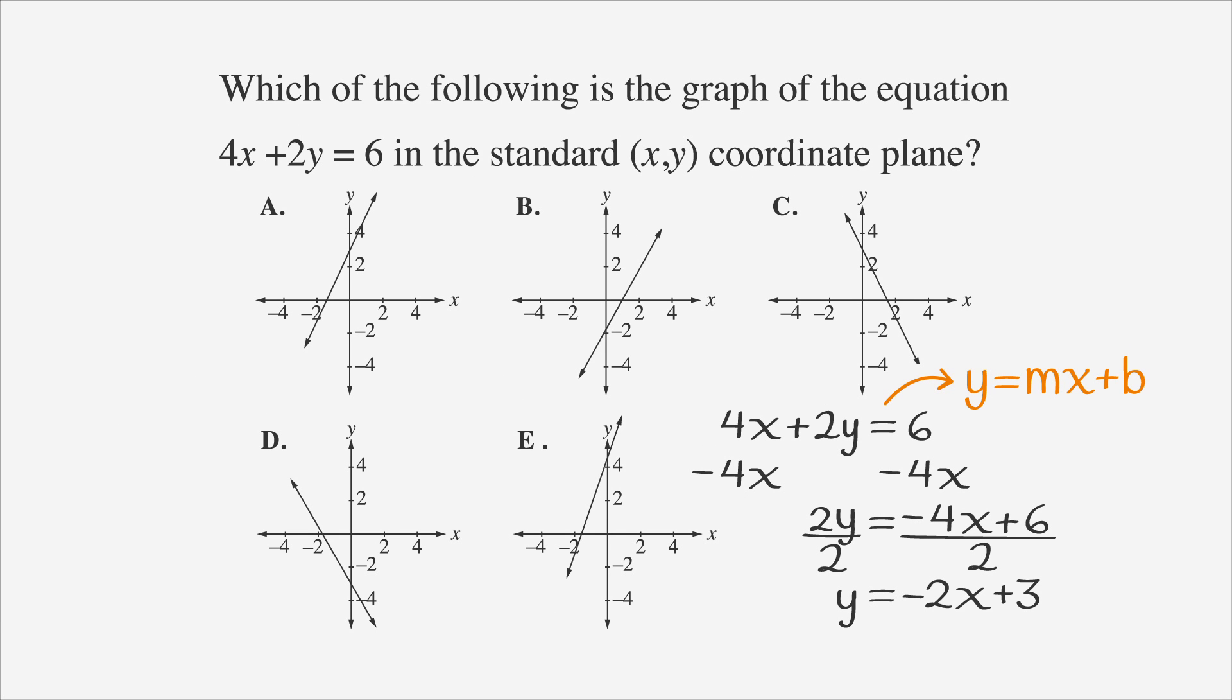Let's go back to our answer choices. The y-intercept of a line is easy to identify on a graph, so let's eliminate the answer choices that don't have a y-intercept of 3. Since the slope is negative 2, we can eliminate any choice where the line moves upward. So, we can eliminate A. We're left with C, which is our answer. Circle it.